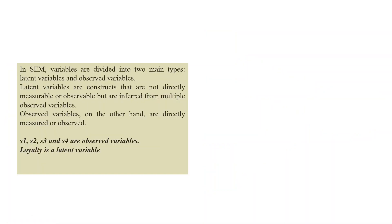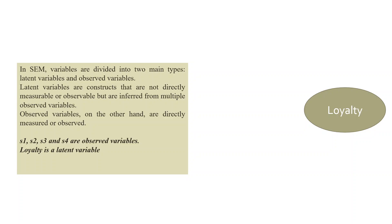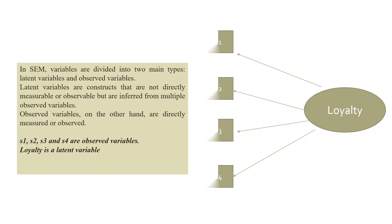In SEM, variables are divided into two main types. Latent variables — for example, loyalty is a latent variable, also known as a construct. You should never put this construct directly on the questionnaire. On the questionnaire, what will appear are your observed variables — the statements S1, S2, S3, and S4. Latent variables are constructs that are not directly measured or observable but are inferred from multiple observed variables. Observed variables, on the other hand, are directly measured or observed. S1, S2, S3, S4 are the observed variables; loyalty is the latent variable.